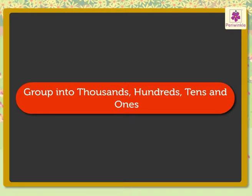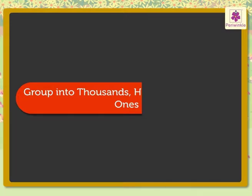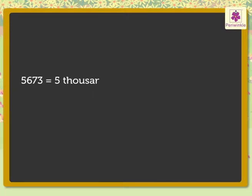So, let us group both these numbers into thousands, hundreds, tens and ones and then subtract them. Thus, there are 5 thousands, 6 hundreds, 7 tens and 3 ones roses.